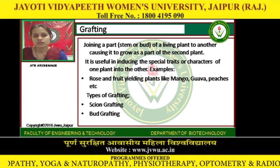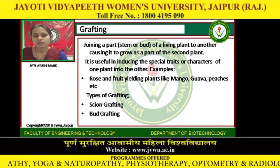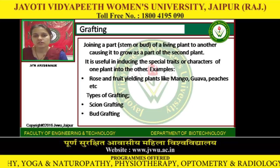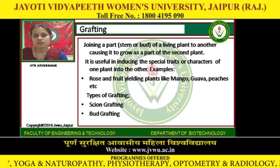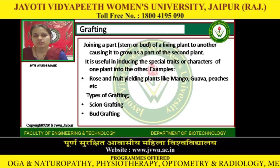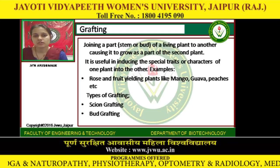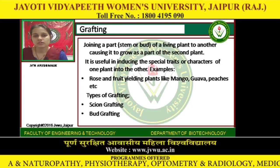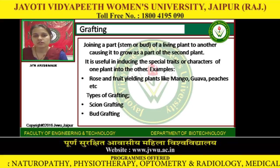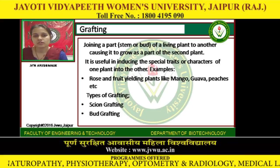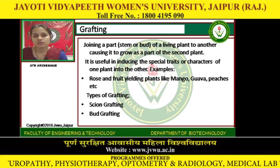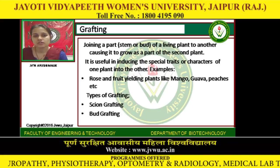Grafting involves joining a part — i.e., a stem or a bud — of a living plant to another, causing it to grow as part of the second plant. It is useful in inducing the special traits or characters of one plant into the other. For example, rose and fruit-yielding plants like mango, guava, peaches, etc.